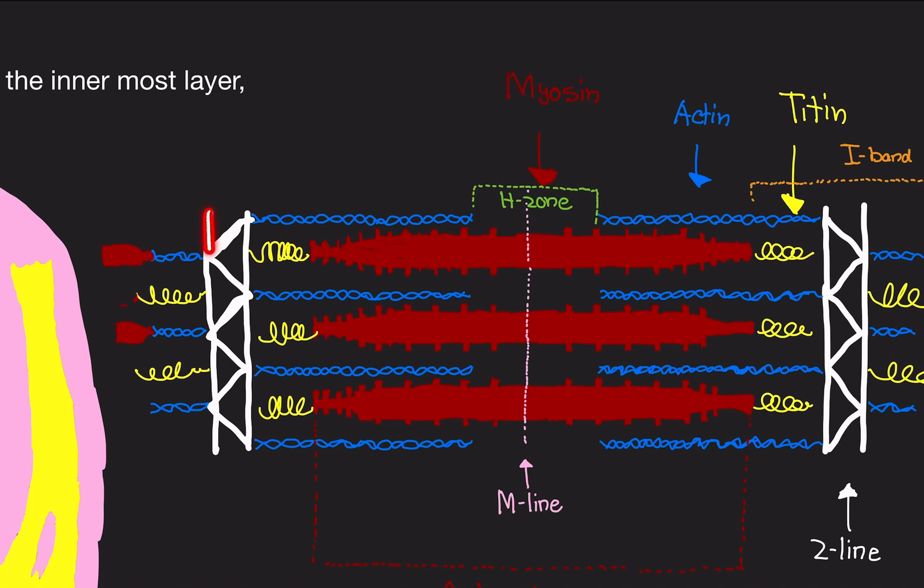So this diagram here is a sarcomere. Let's break it down layer by layer. Notice that we have these white zigzag lines. They kind of look like z's. These z-look structures right here. From one z to the other z-line is one sarcomere. So this section right here between the two z-lines is one sarcomere.